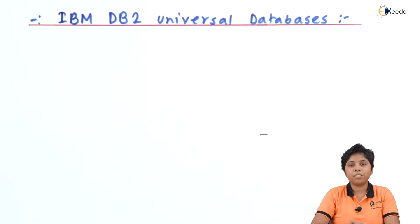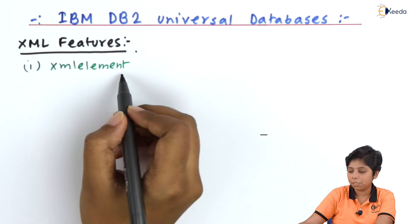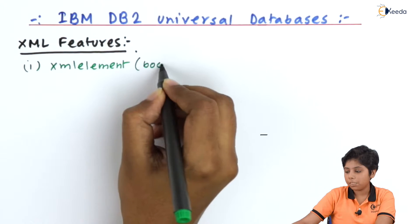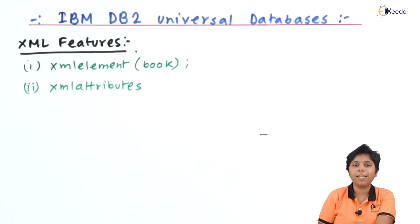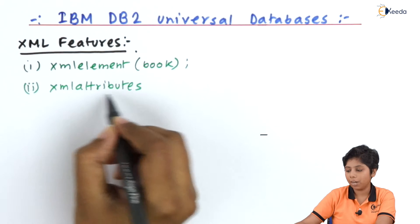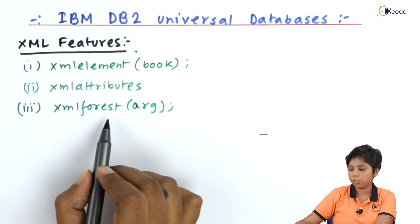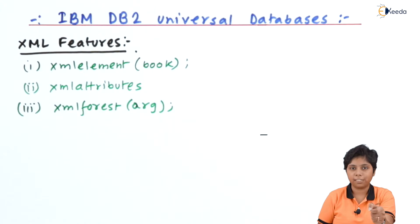First are the XML features in DB2. We can use XML Element to create an element tag — for example, calling XML Element to create the 'book' element. To define element attributes, we use the XML Attribute specification. Whether something is an attribute or a sub-element is decided by the XML Attributes function. Next is XML Forest, which creates an XML forest or a sequence of XML elements from given arguments.